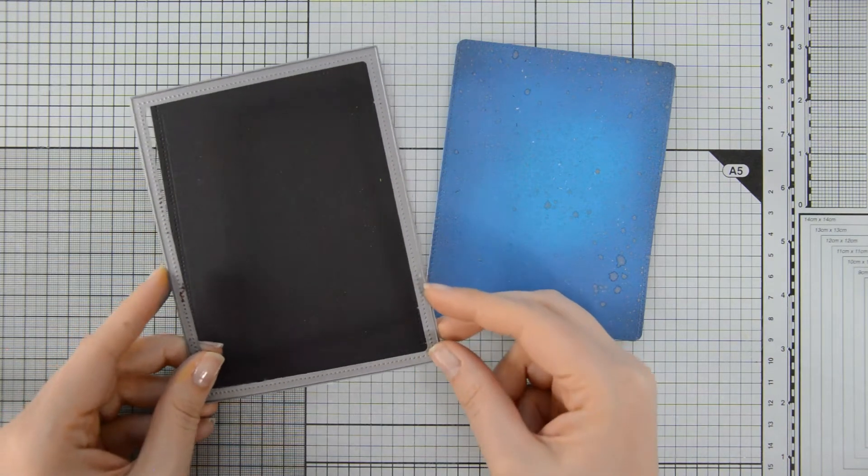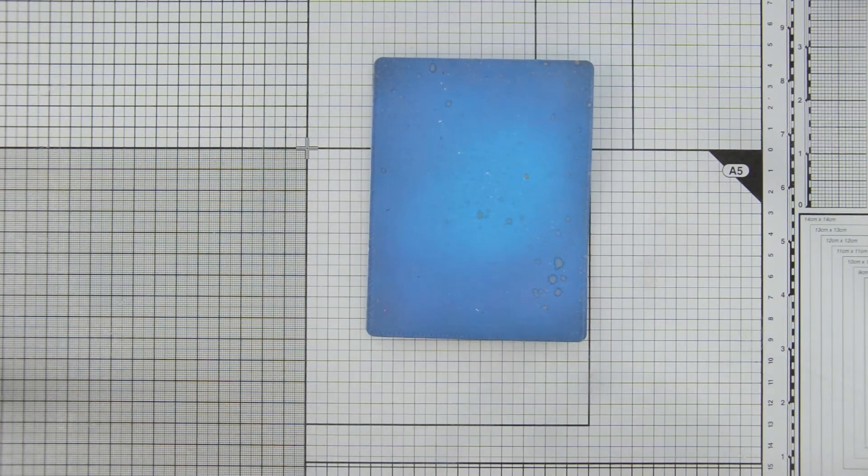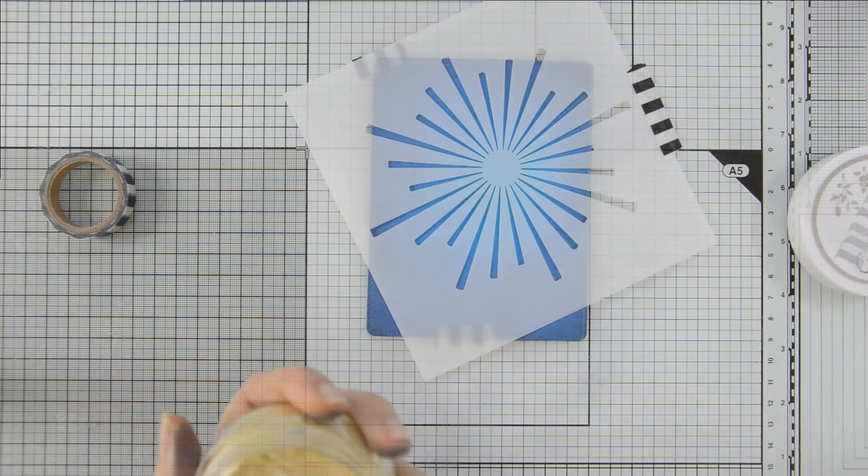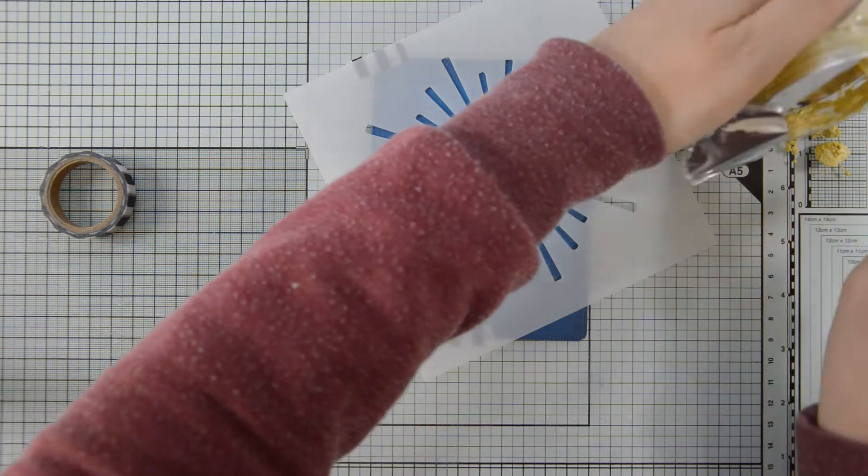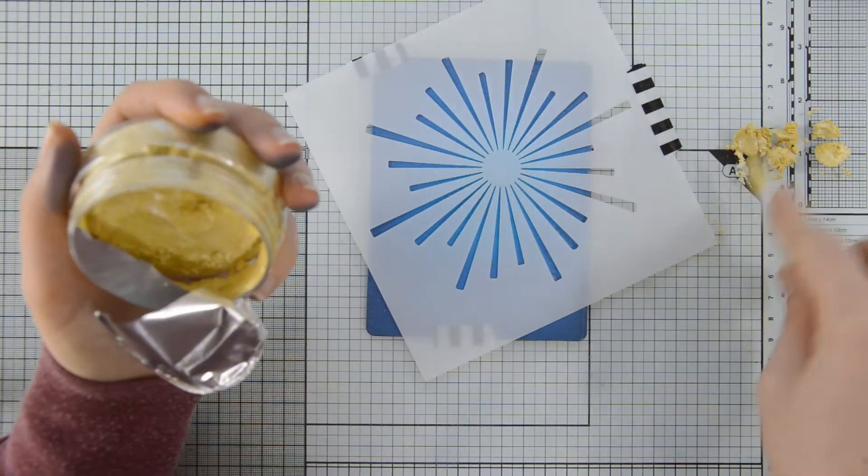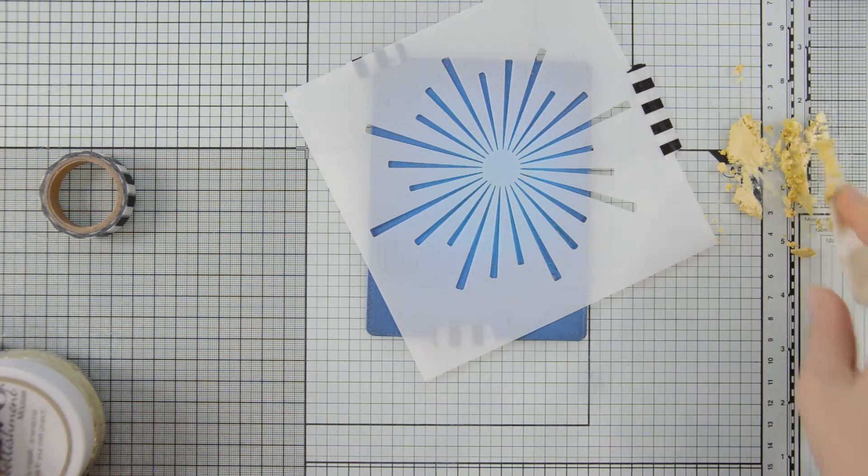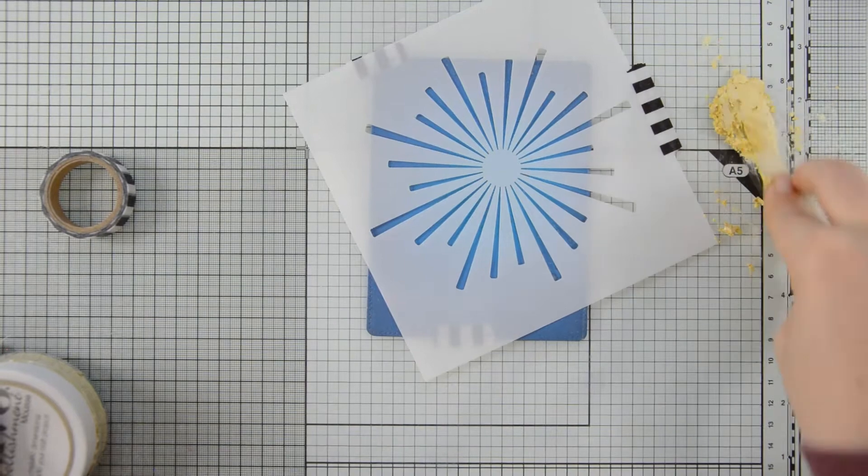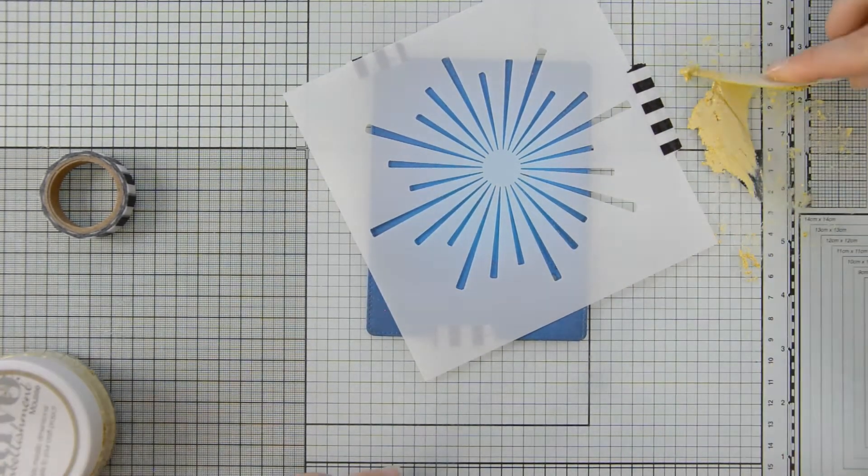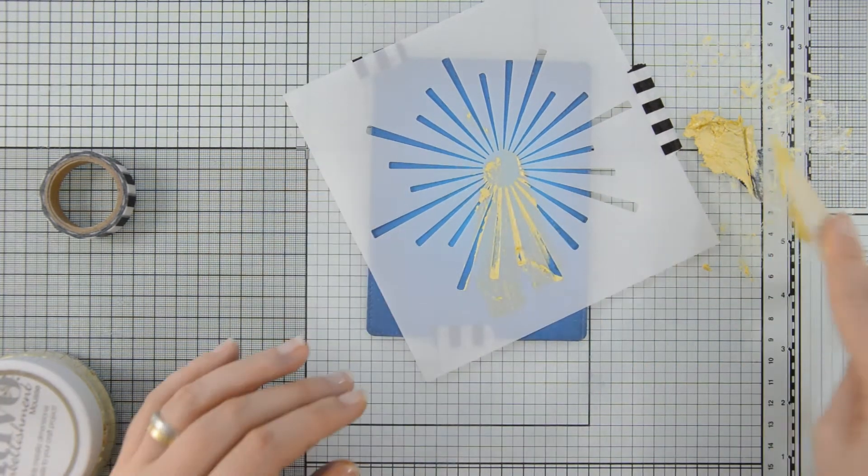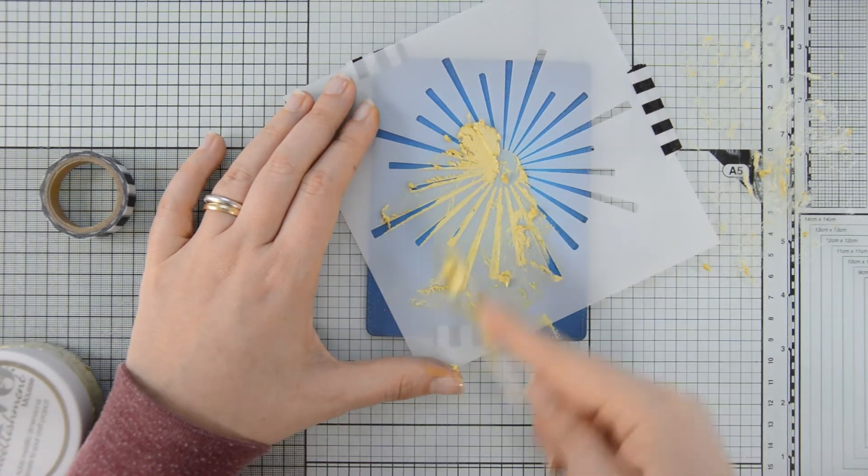And then I die cut some black cardstock to an A2 size using the Dotted Rectangle in the Darling Ribbon and Frames die set. In order to bring even more attention to the focal point of my card, which will be Coby the Bear, I decided to use the Light Race Stencil by Studio Katia together with my Nouveau Mousse in Lemon Sorbet. I first worked my mousse on my glass mat in order to soften it up a little bit and to warm it up. And then I applied it through my stencil.